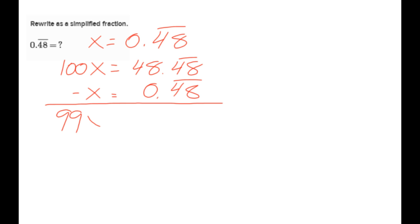When I subtract that, I get 99x equals 48, divide by 99, 3 goes into both, so I get 16 over 33. And some of you right away are jumping to the conclusion that it's just over 99, but it's not always over 99, so that's why we have to learn the process.